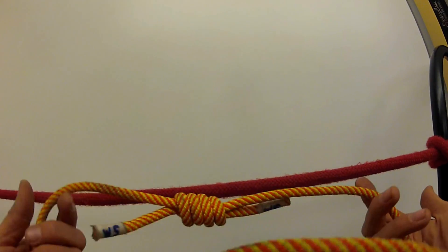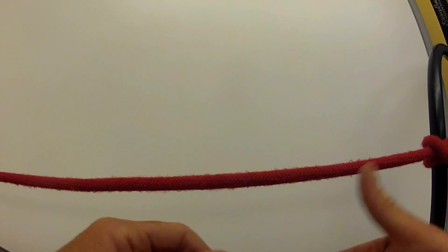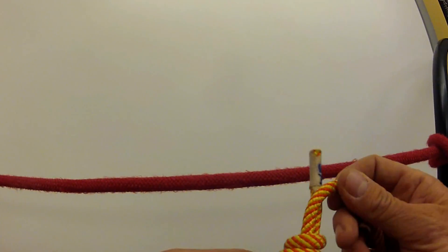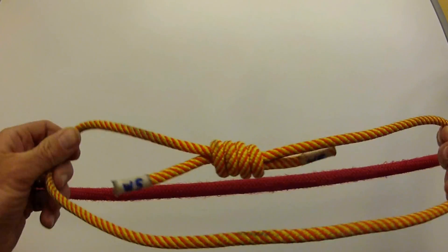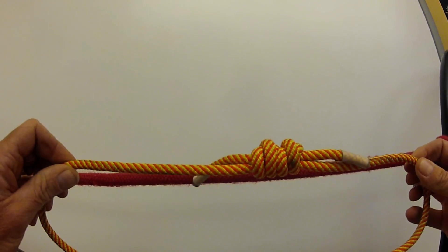Alright, this is an example of tying a rescue prusik on a taut line using a seven millimeter correlate tied into with a double fisherman's.